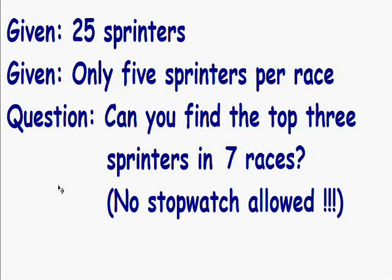Welcome to another one of my brain teasers. I don't know how many of you watched the Olympics this past summer, but I especially enjoyed watching all of the track and field events, so I thought it would be fun making a brain teaser related to sprinting. So here in this brain teaser we have 25 sprinters, and only 5 sprinters are allowed per race. The question we need to find out is: can we find the top 3 fastest sprinters in just 7 races?